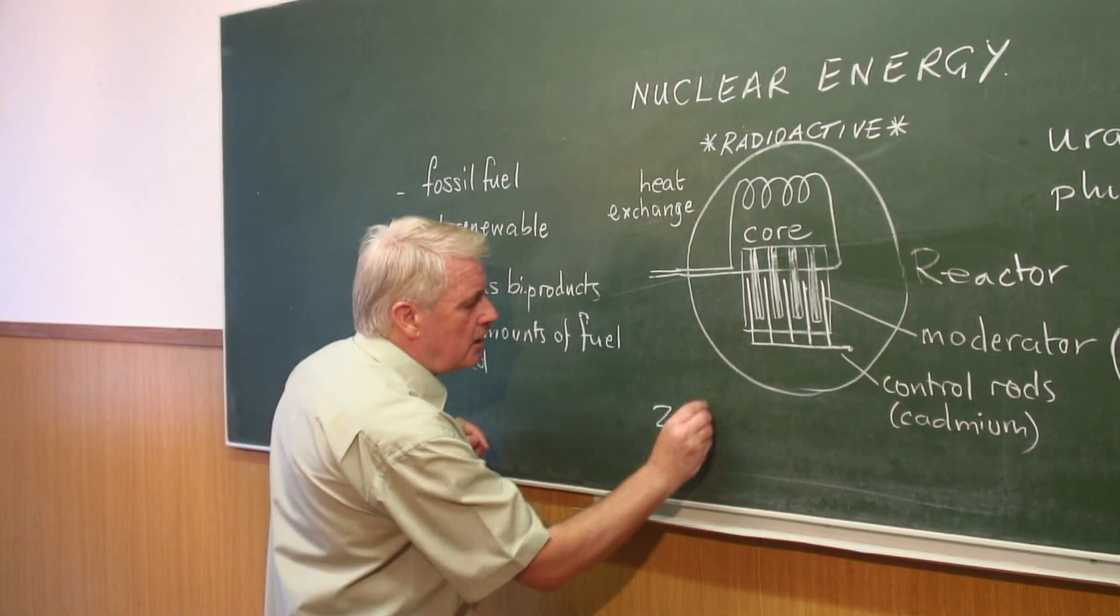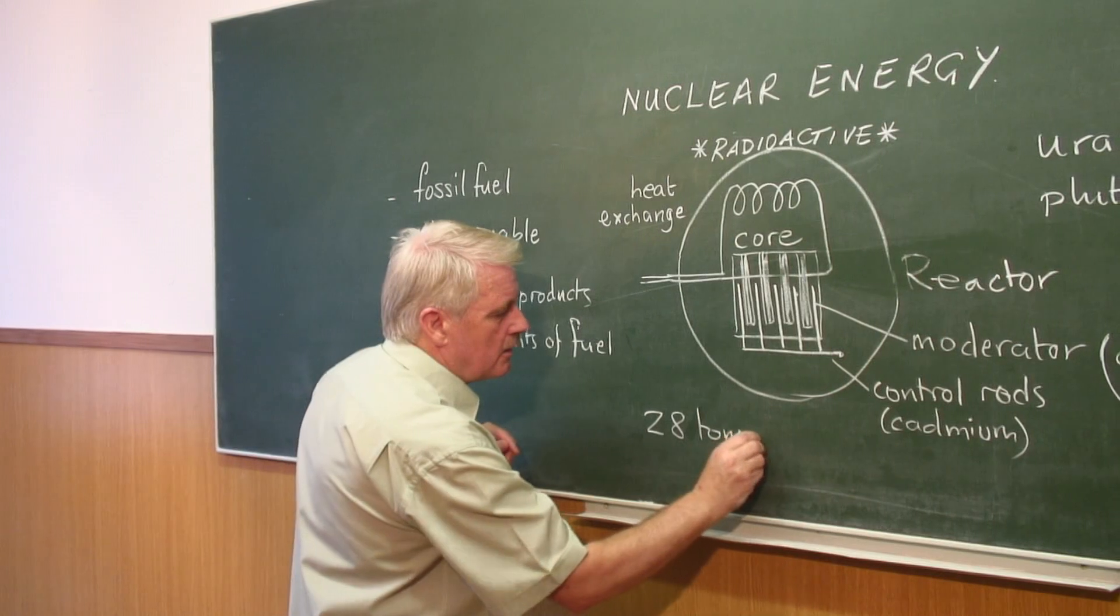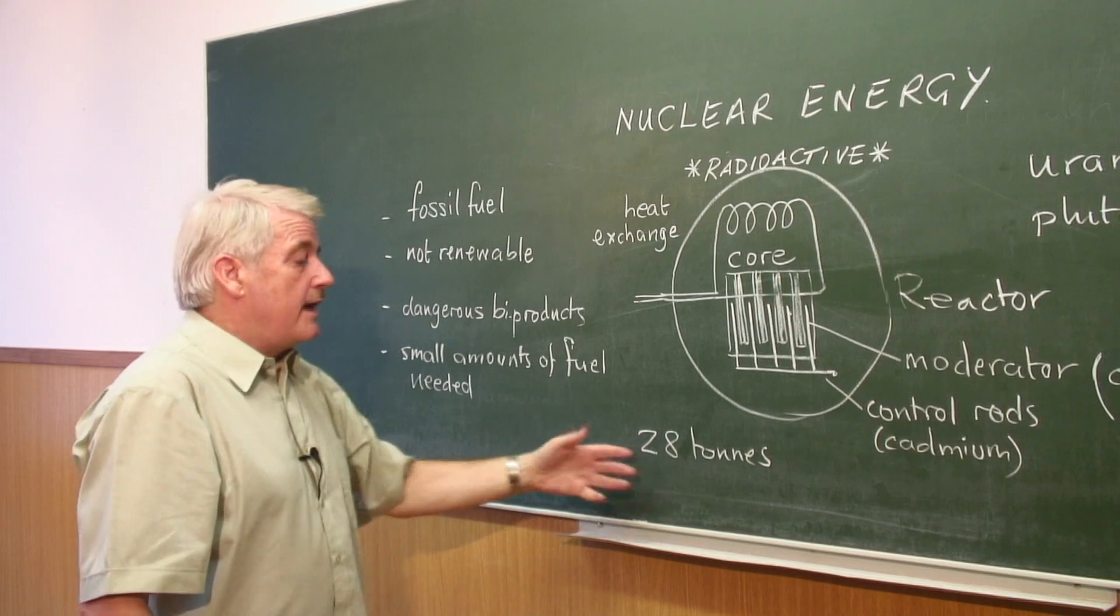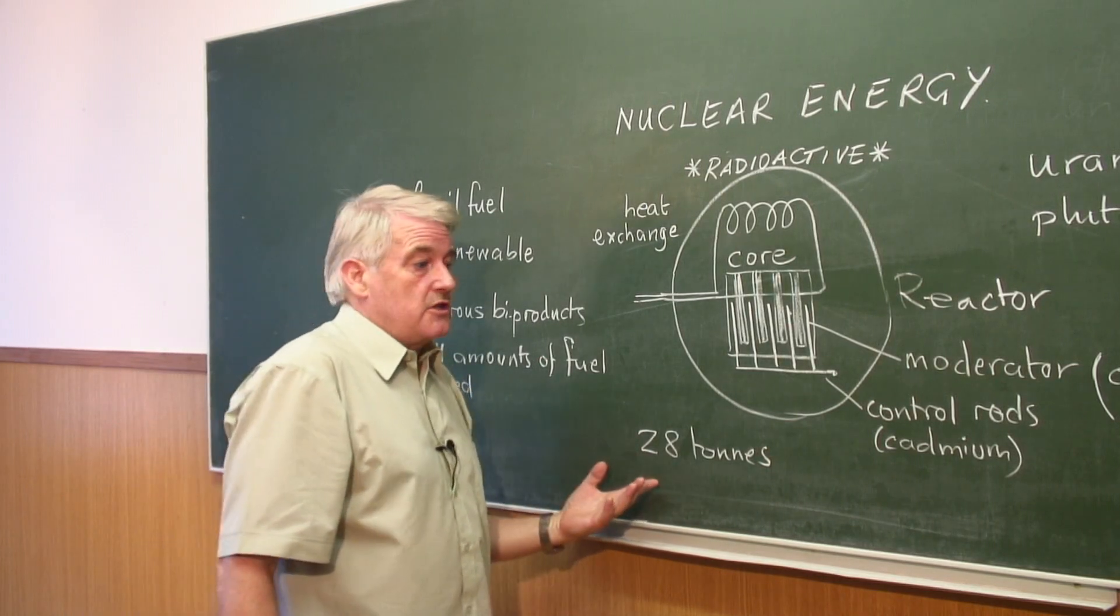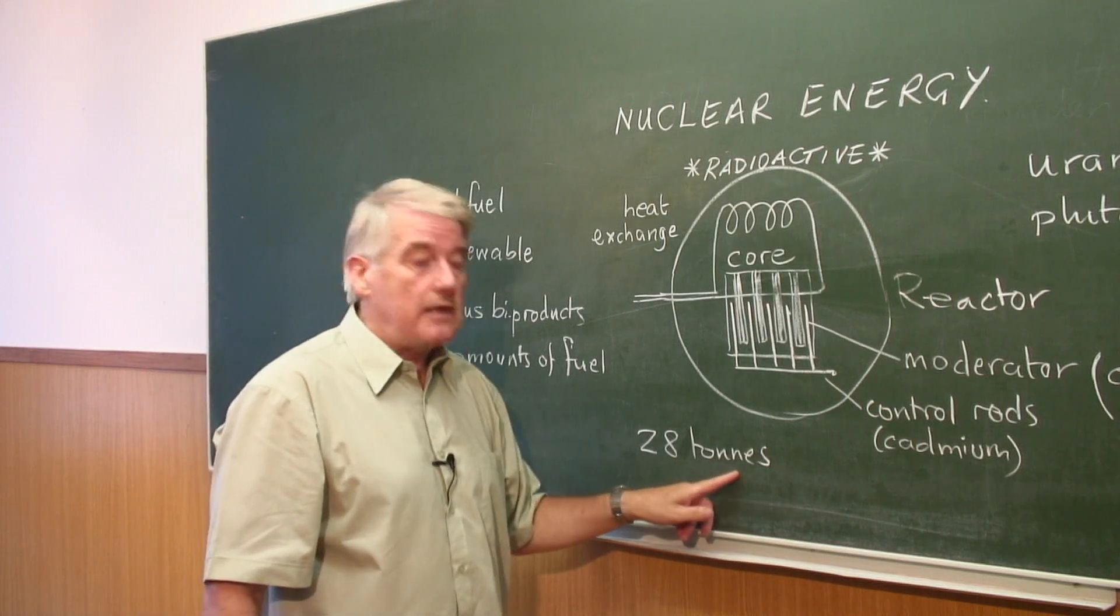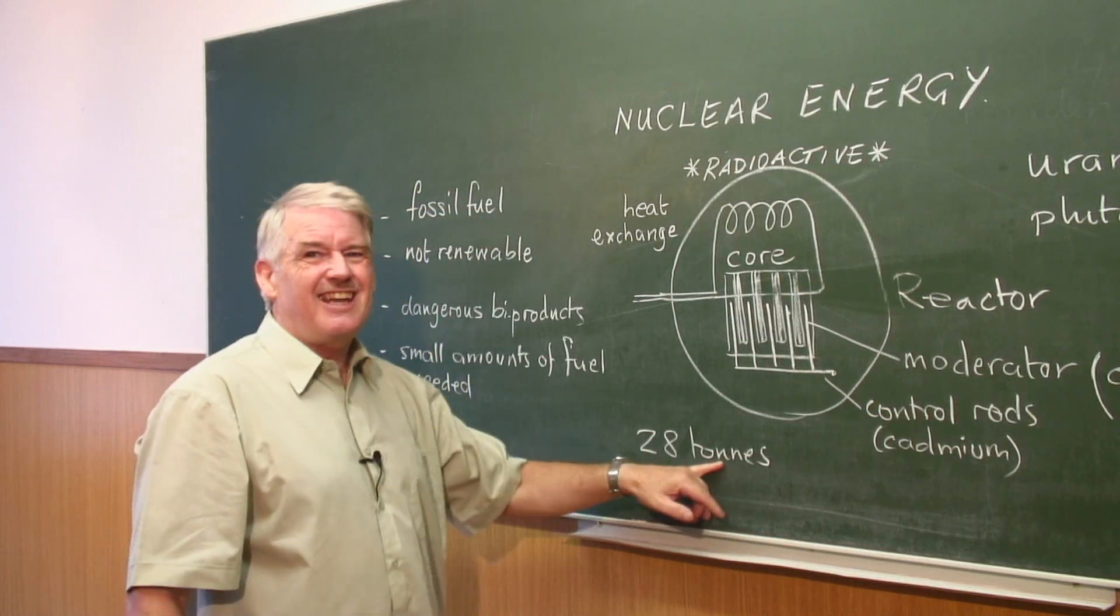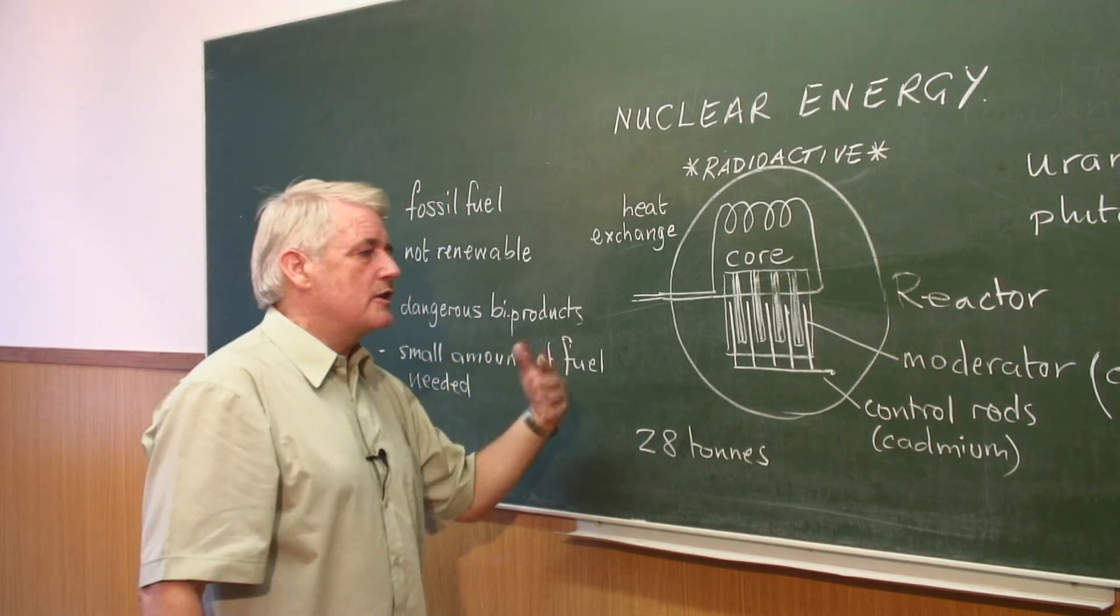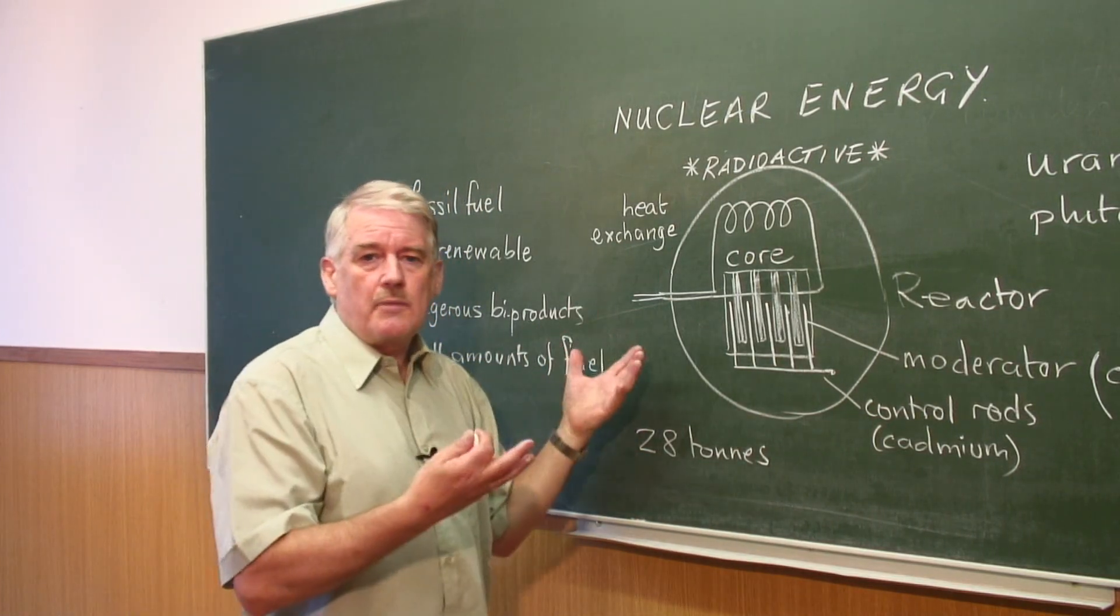28 tons for a year of working, whereas a coal power station would need 2,000 tons a week. This needs only 28 tons a year. So we don't have large transportation of large amounts of fuel.